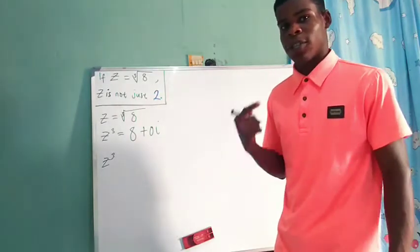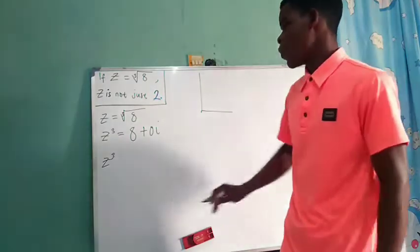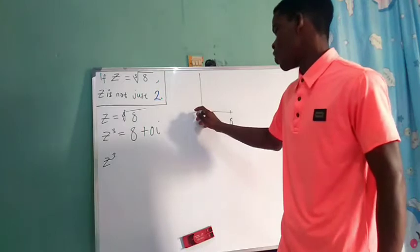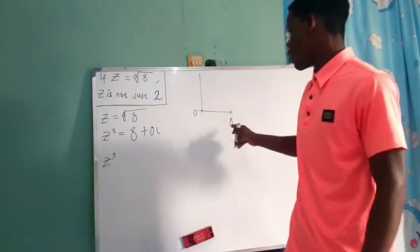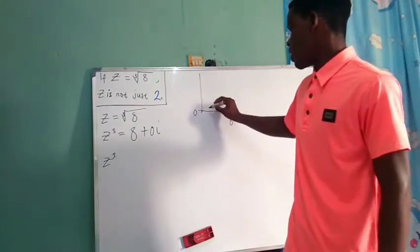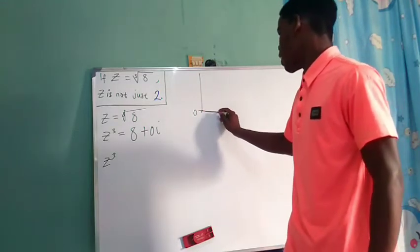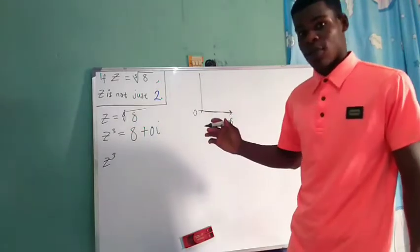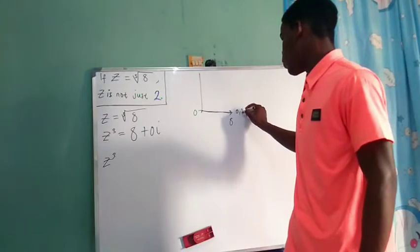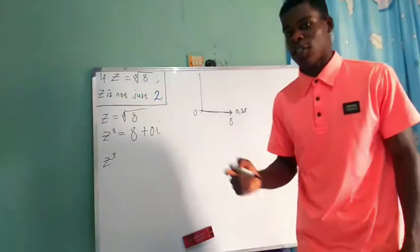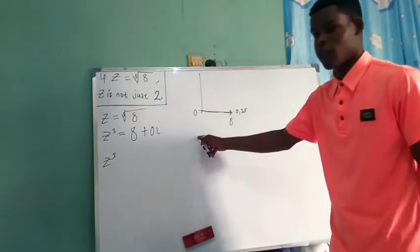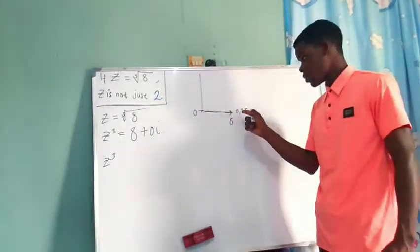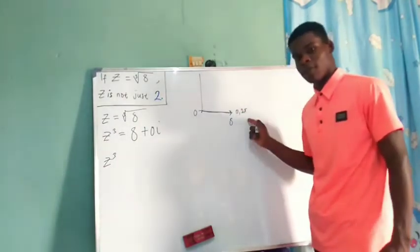Putting this on a graph, we have 8 on the x-axis and 0 on the y-axis, so the point is just on the real axis. We trace to this point. At this angle, it's just 0, or we have it to be 0 or 2π. Sine of 0 is the same as sine of 2π, and cosine of 0 is the same as cosine of 2π.